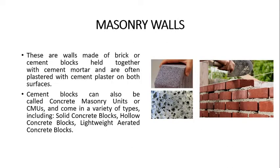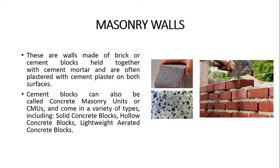Now let's talk about masonry walls in more detail. Masonry walls are those walls made of either bricks or cement blocks, held together with the help of cement mortar, as you can see. The building of such a wall will be rough and unfinished, so to beautify a wall we plaster both sides with cement plaster. Cement plaster gives it a smoother look and prepares the wall to be decorated with white washes, distempers, or any surface material like ceramics, tiles, red bricks, marble, etc.